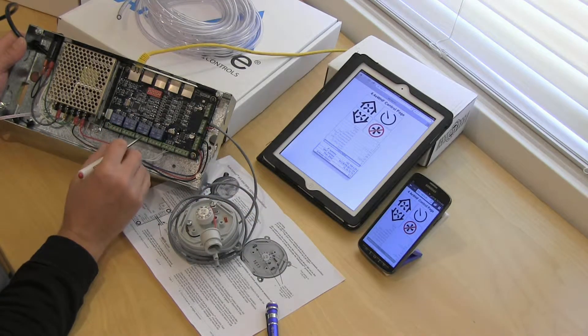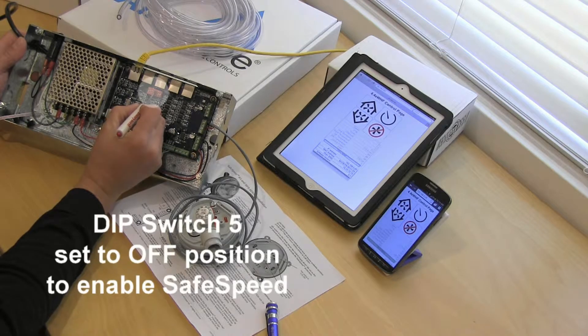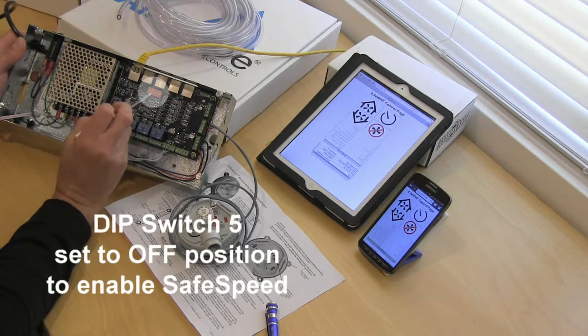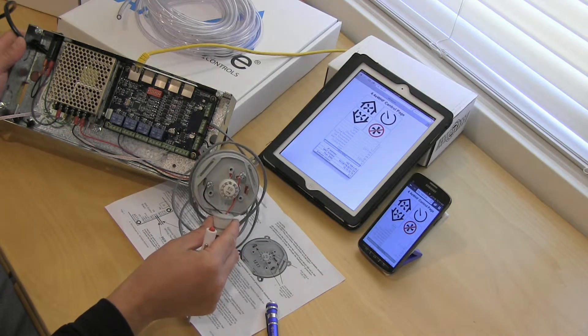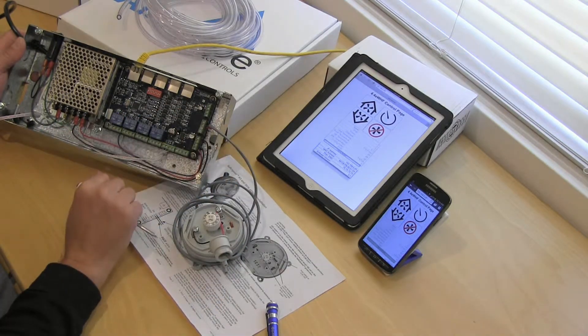Next thing you want to make sure you do is you take dip switch number 5 and you flip it to the down position just like that. So it's got to be in a down position. If it's not, even though you have your sensor hooked up to that control board, it will not be operational.